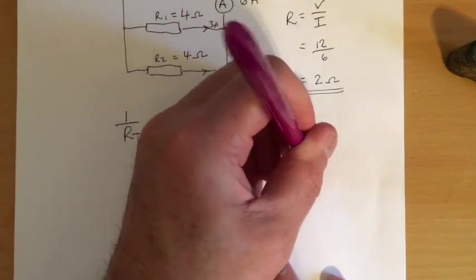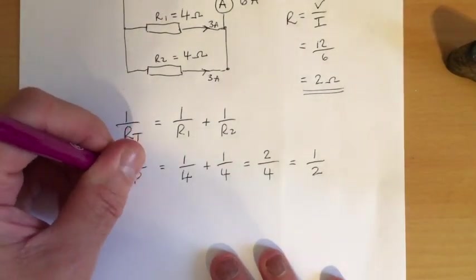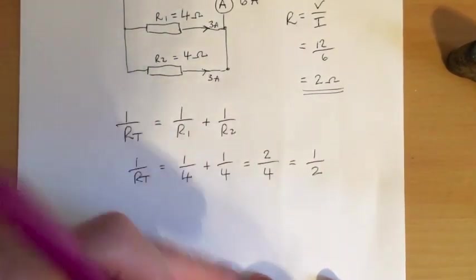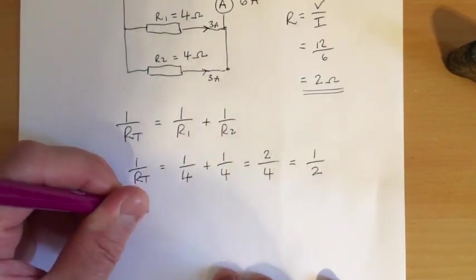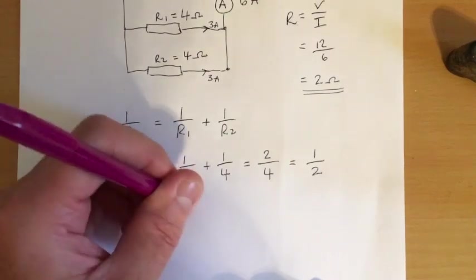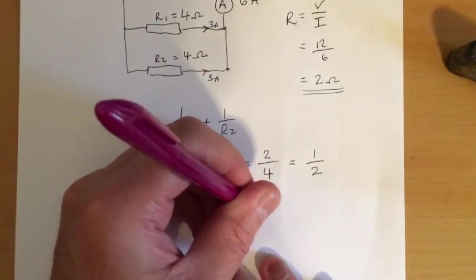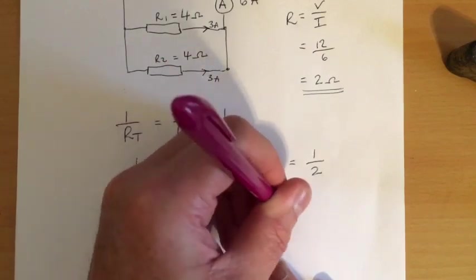Simplify that. 1 over 2. So 1 over the total resistance equals 1 over 2. Flip it. I'm going to flip the whole lot upside down. So RT over 1 over 1 equals 2 over 1. So the total resistance is 2 ohms.